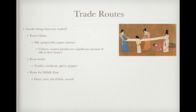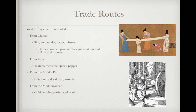Be able to identify different goods that are being traded from each region. From the Mediterranean, you have gold, jewelry, perfume, and olive oil, which is being made here by crushing olives.